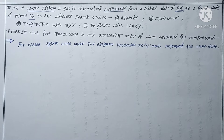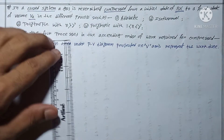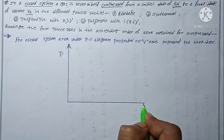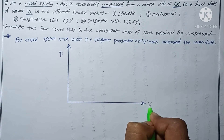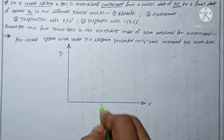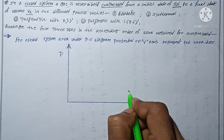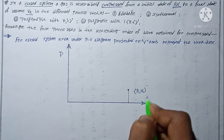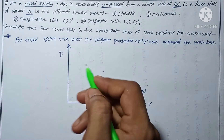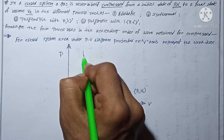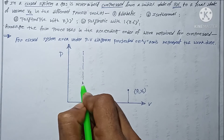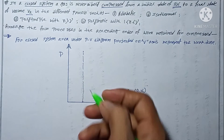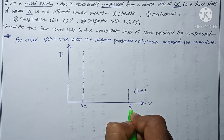First I draw the axes: the y-axis represents pressure and the x-axis represents volume. Initially the volume is v1. I consider state 1 with pressure p1 and volume v1, and state 2 represents volume v2. So I draw a constant-volume line at v2 and mark v1 on the axis.